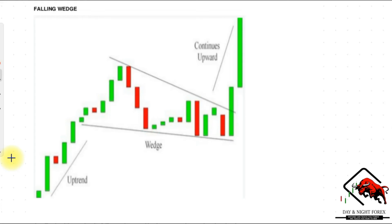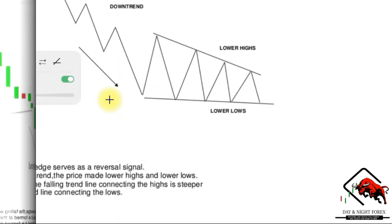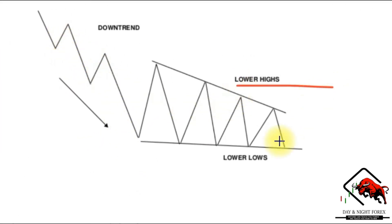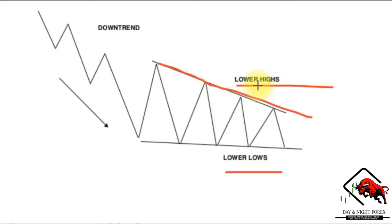Unlike the rising wedge, the falling wedge is a bullish chart pattern. It is formed with lower highs and lower lows, but the lower highs are more pronounced than the lower lows. The falling wedge serves as a reversal signal after a downtrend — notice how the falling trend line connecting the highs is steeper than the trend line connecting the lows. This line is steeper due to the lower highs being more active, while the lows side is less steep.